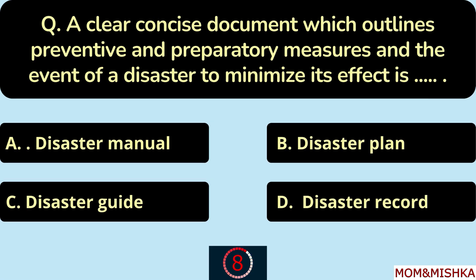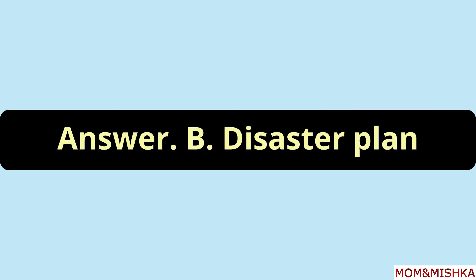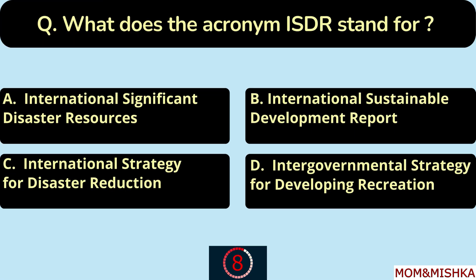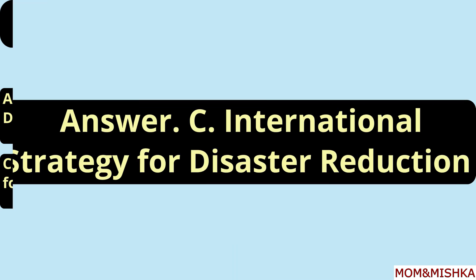A clear, concise document which outlines preventive and preparatory measures in the event of a disaster to minimize its effect is a disaster plan — option B. The acronym ISDR stands for International Strategy for Disaster Reduction — option C.